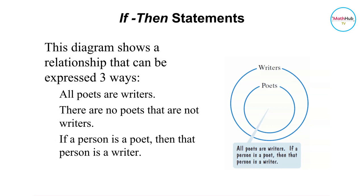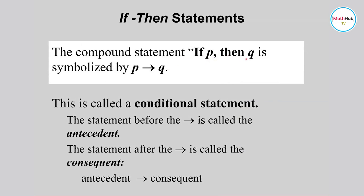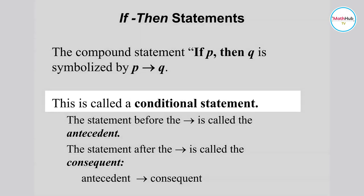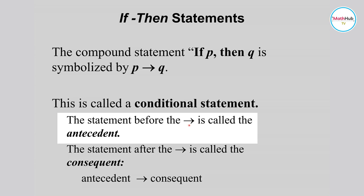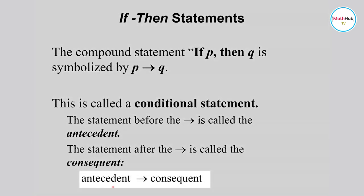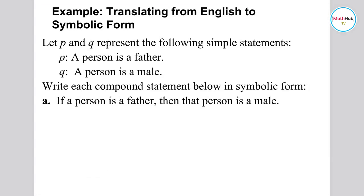The if-then statement can be represented using a Venn diagram. The compound statement 'if p then q' is written symbolically using the arrow symbol. This statement is also called a conditional statement. The statement that comes before the arrow symbol is called the antecedent, and the statement that comes after the arrow symbol is called the consequent.